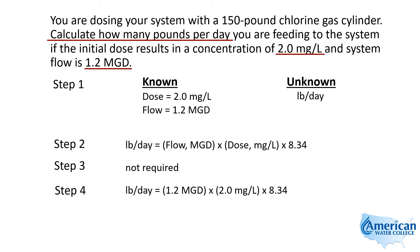Plugging in our flow of 1.2 MGD, our dose of 2 milligrams per liter, and 8.34 pounds per gallon — we multiply that all together and that gives us 20 pounds per day.